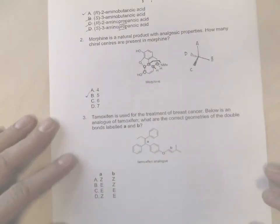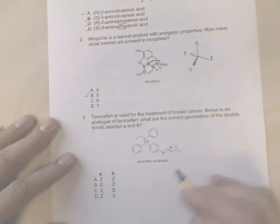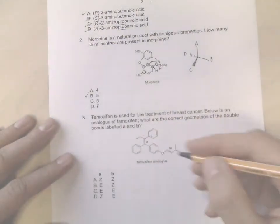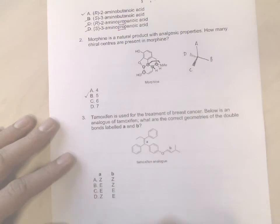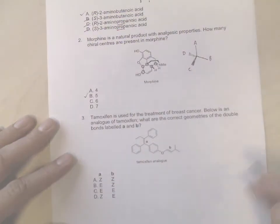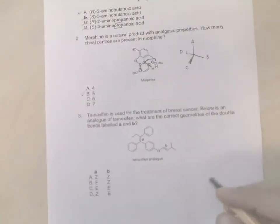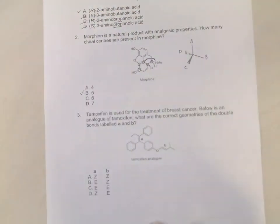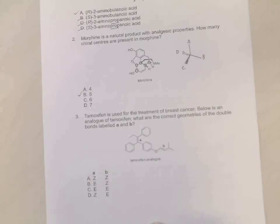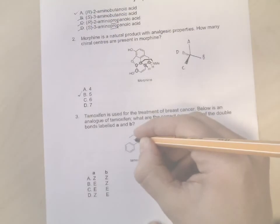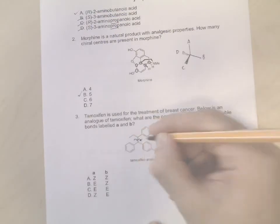Okay, moving on to question three. This is to do with tamoxifen and the correct geometries of the double bonds, which one is labeled A and which one's B. So don't confuse which one's A and which one's B because you'll mix the answers up. We're going to use the priority rules here, so the same priorities are used to determine R and S for chiral centers.